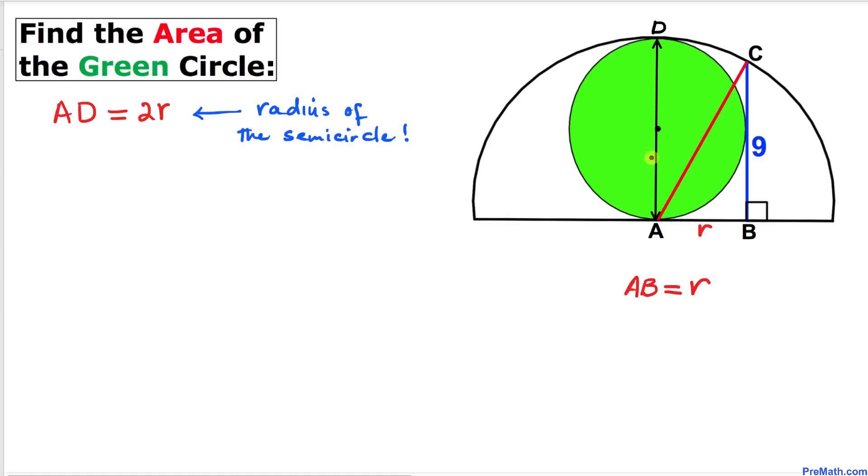Now let's focus on this line segment AD—that is the diameter of this green circle. So this is r and this radius is r as well, so this total length is 2r. Also, we can see that AC is the radius of this semicircle, so therefore we conclude that this AC length is going to be 2r as well.